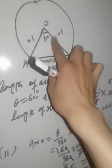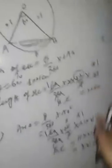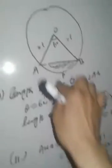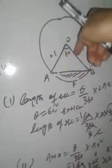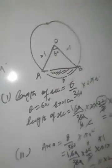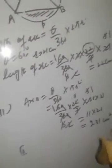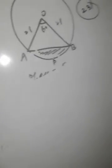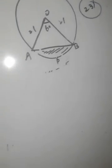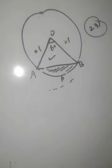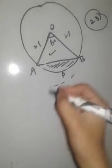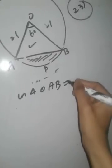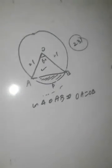Now to find the area of segment: area of segment = area of sector minus area of triangle OAB. If you subtract the whole sector area with the area of triangle, you are left with the area of segment. Please pause the video to note this down. Area of sector is 231 — keep that. Now let us find the area of triangle OAB. Here is a very important concept.